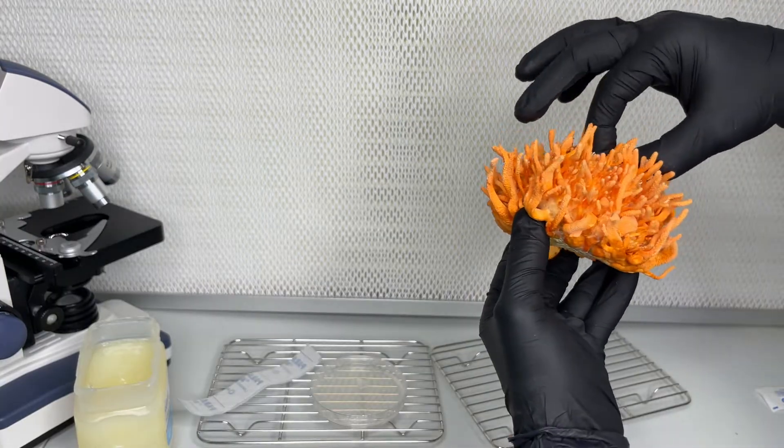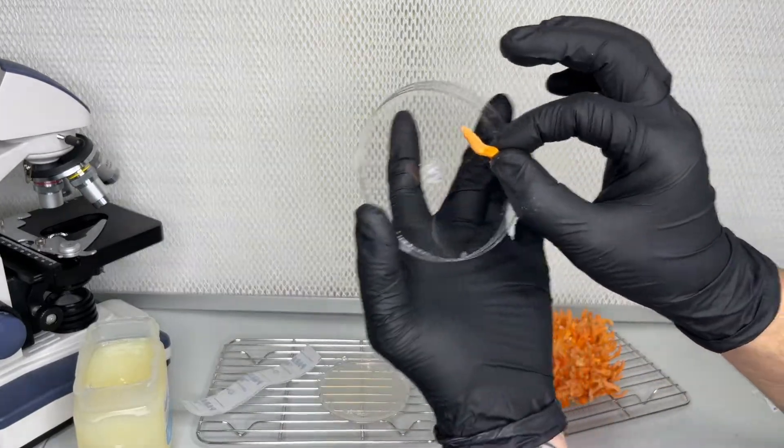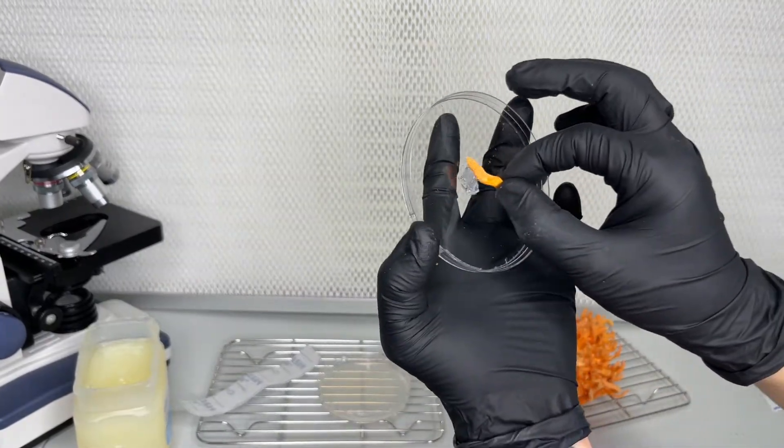After sticking the Cordyceps to the top of the agar plate, it is sealed with parafilm and allowed to incubate at 70 degrees Fahrenheit for two weeks.